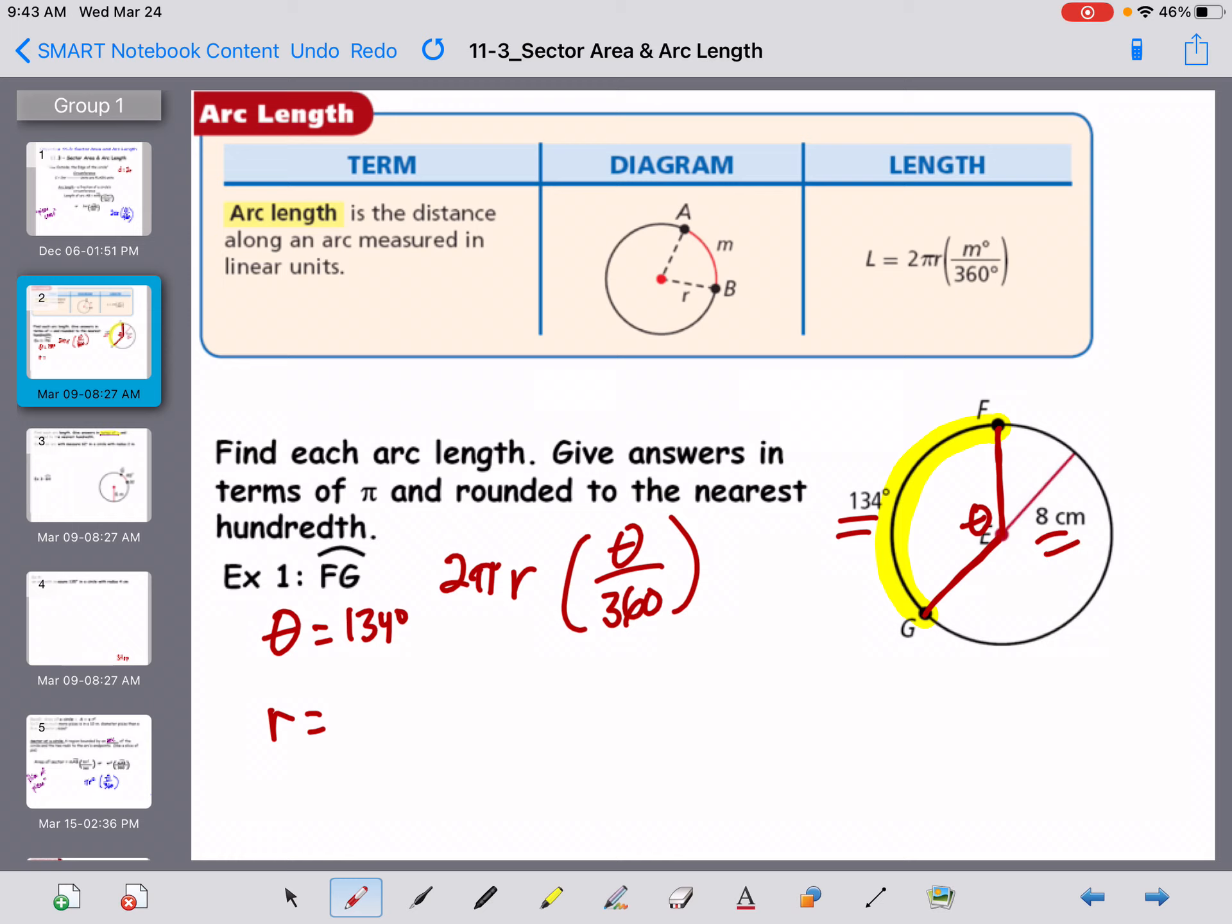So 8 centimeters is my radius. Even though it's over here on this other side, it's still the radius because it's from the center. So I've got all the information I need. 2 pi, r is 8, 134 over 360.